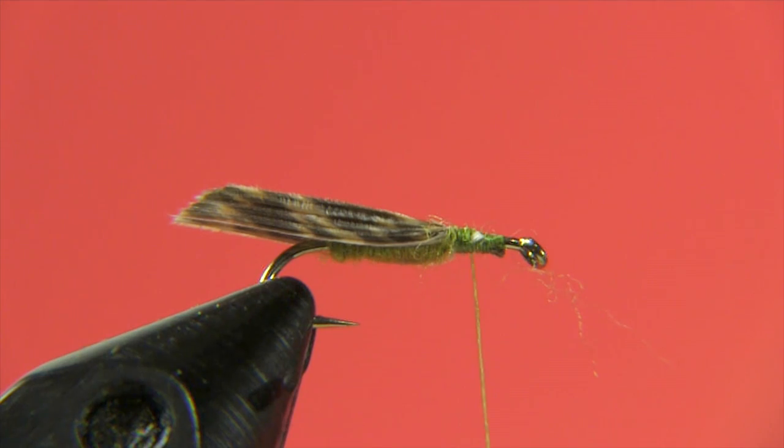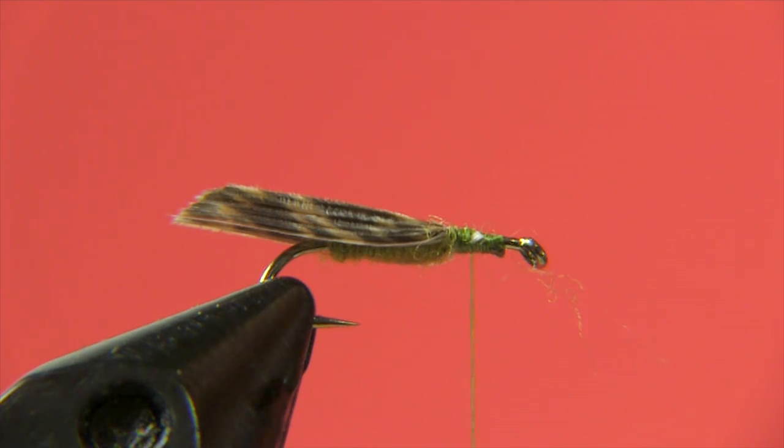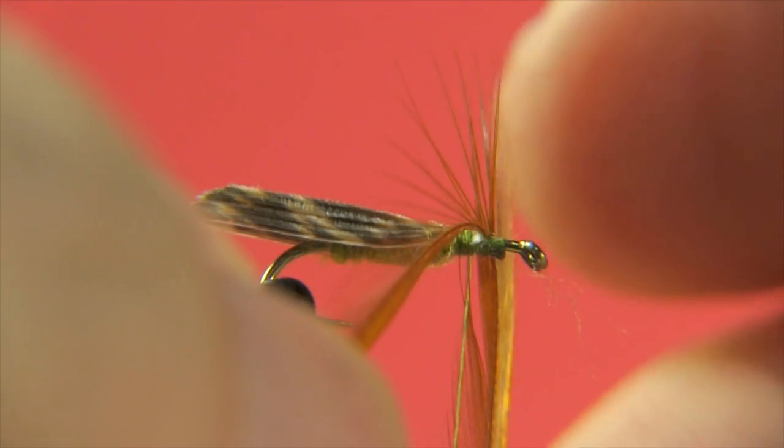Now I'm going to find a feather whose barbs are roughly twice the gape of the hook. Normally we would use something that's around one and a half times, but again, this is an undersized hook for the size of the fly.